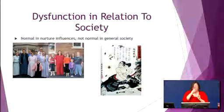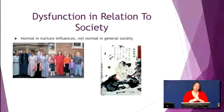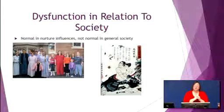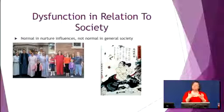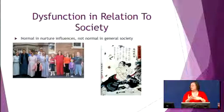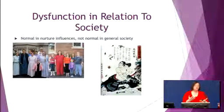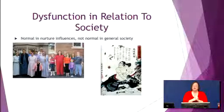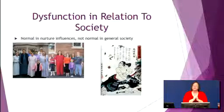As an interesting side note, since this is being recorded in New York — in New York, committing suicide is illegal. So again, it's dysfunction in relation to society: here in New York suicide is illegal, while in Japanese culture suicide was acceptable to preserve your family honor. Those are the five criteria for determining whether or not someone has a psychological disorder. Thank you. Bye.